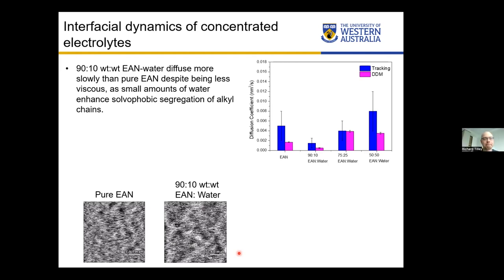Another question asked whether video rate AFM is compatible with other AFM techniques such as Kelvin probe, magnetic force imaging, or conductive measurements. For high-speed imaging, it is currently only adapted for topographic imaging, though phase images can be obtained simultaneously. Unfortunately, techniques like Kelvin probe are not currently compatible with the high-speed mode.